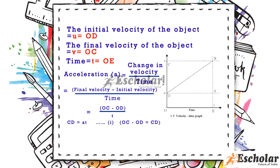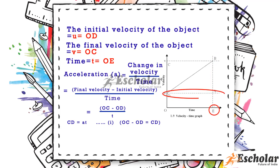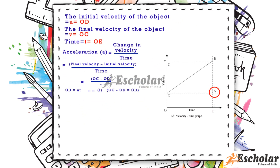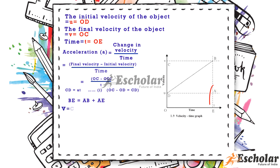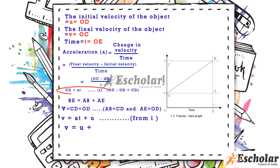CD = at, since OC - OD = CD. Draw a line parallel to the y-axis through B crossing the x-axis at E, and a line parallel to the x-axis through D crossing line BE at A. From the graph: BE = AB + AE, that is v = CD + OD, where AB = CD and AE = OD. Therefore v = at + u, giving the first equation of motion: v = u + at.